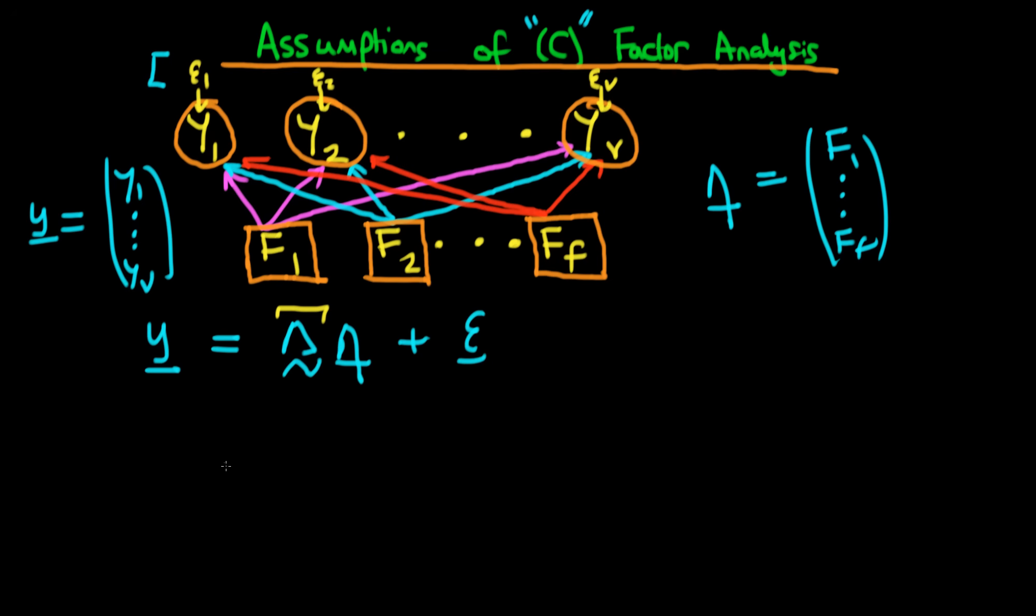Okay, so we've just rewritten the model that we had before. What are the assumptions of confirmatory factor analysis? Well, one of the assumptions is that the expected value of Y is equal to zero. What does that mean in practice? Well, that means that essentially each of these observed variables has been standardized. So what do I mean by standardized? Essentially what we have, if we consider let's say the first component in its raw form,